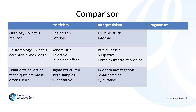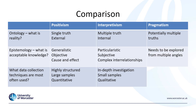Pragmatism believes there are potentially multiple truths, but we don't necessarily know. Therefore when it comes to our epistemology, the belief is it needs to be explored from multiple angles. This leads to the use of mixed methods, where we use both quantitative and qualitative data to explore a particular phenomenon in more detail from different angles. Both positivism and interpretivism may play a part in getting to our final answer, so we can see pragmatism as sitting in the middle of the spectrum between positivism and interpretivism.